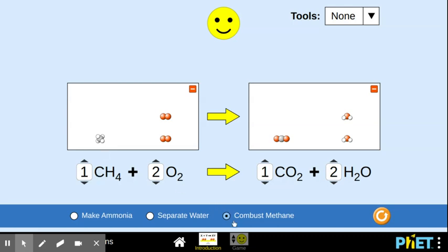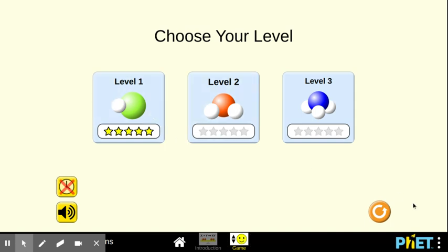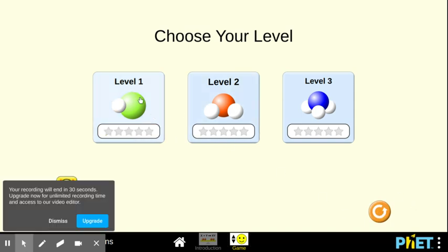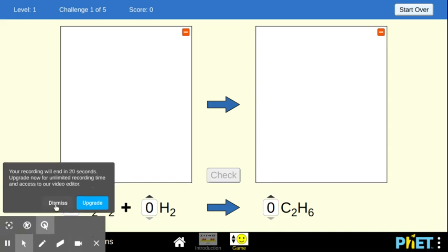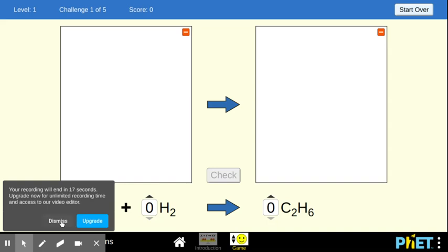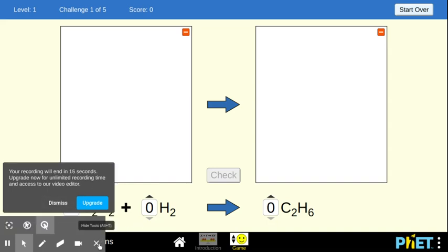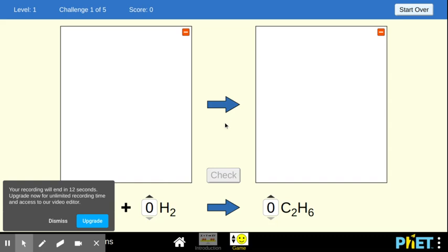So what you're going to do is come down here to the game. You're going to play this level one right here. Click on this. Then you're going to balance these. It's going to give you five. You want to play these until you get four out of five stars at least. Do the balancing games and then submit a screenshot of your game.